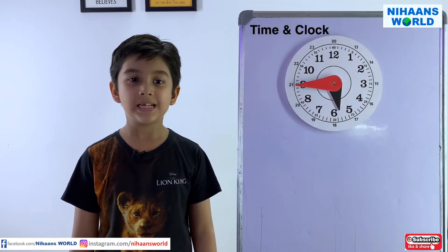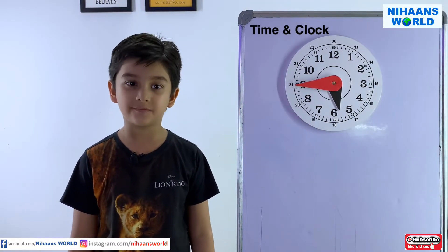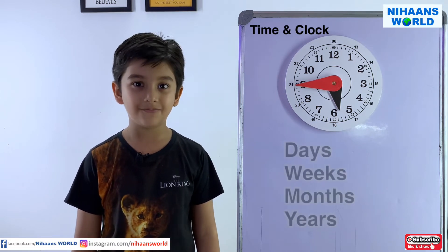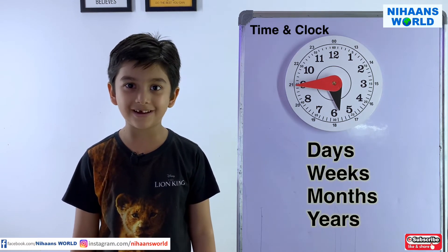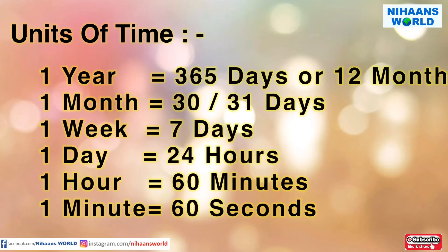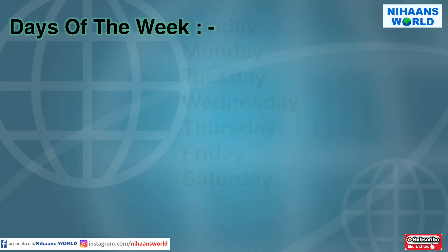Friends, let us learn about higher units of time. They are days, weeks, months and years. One year is equal to 365 days or 12 months. One month is equal to 30 or 31 days. One week is equal to 7 days. One day is equal to 24 hours. One hour is equal to 60 minutes. One minute is equal to 60 seconds.